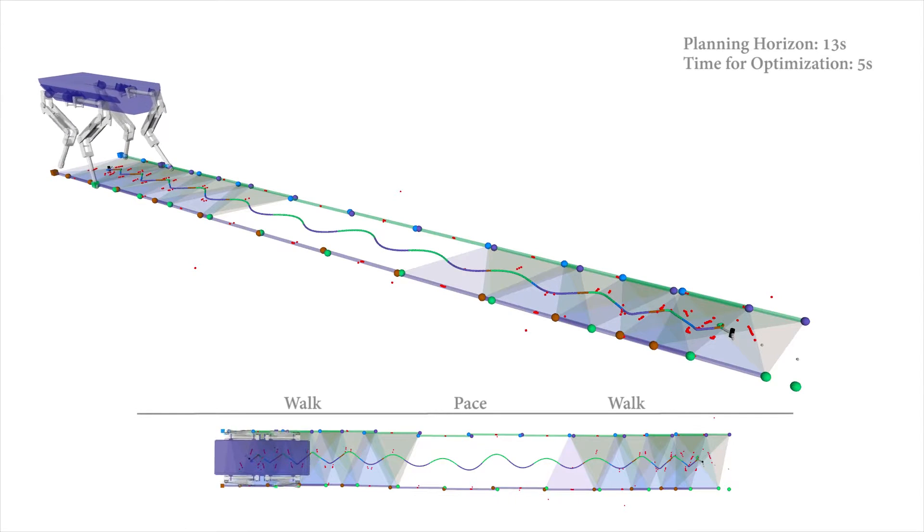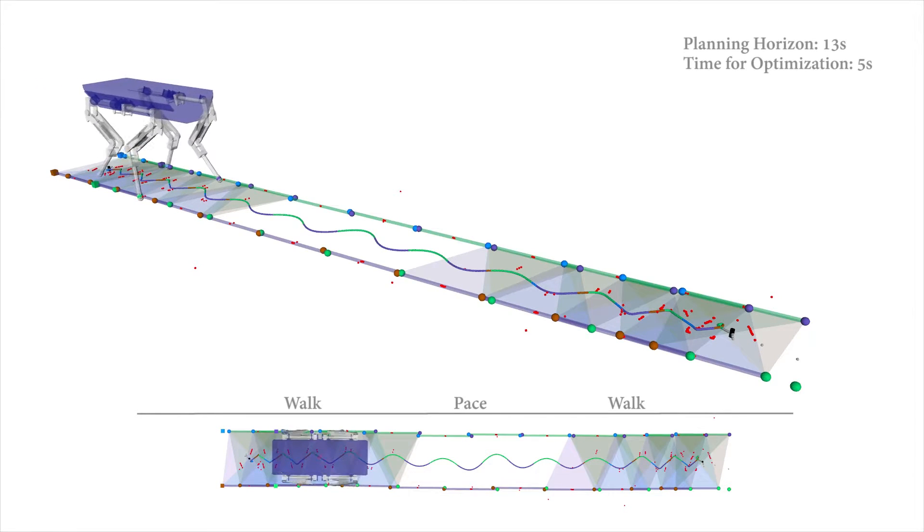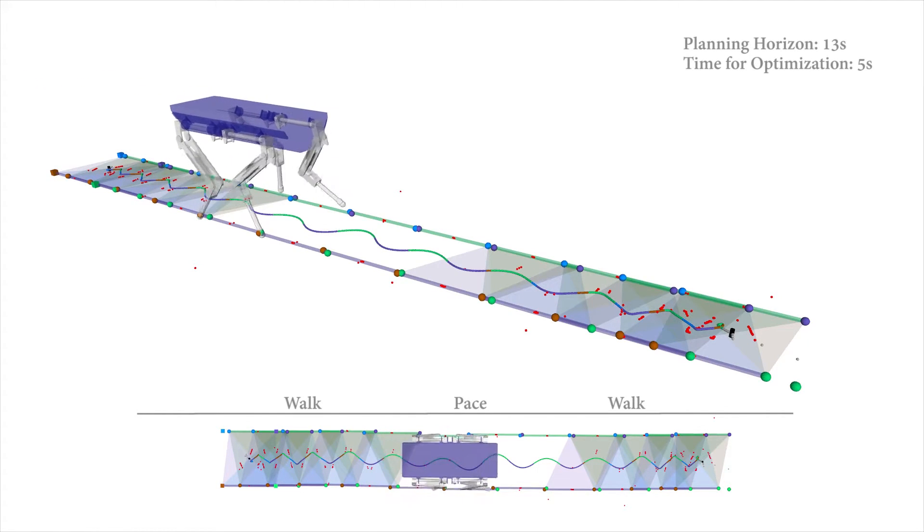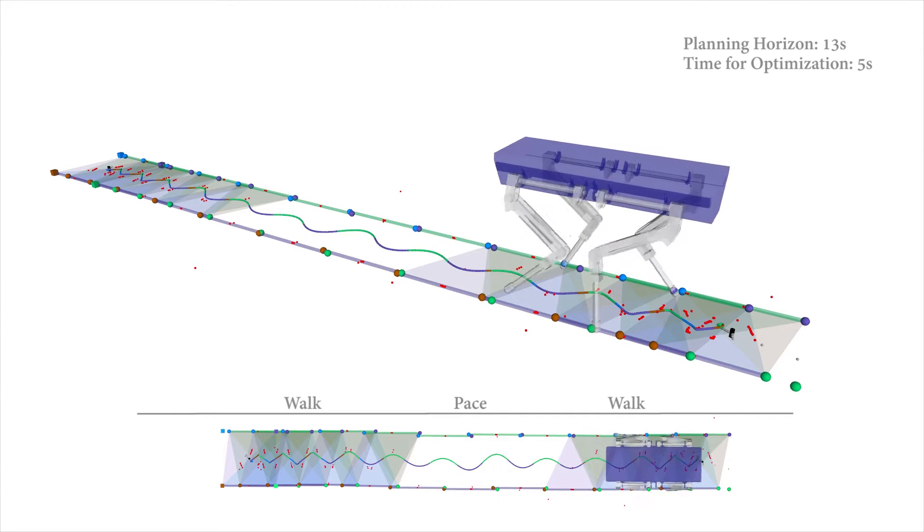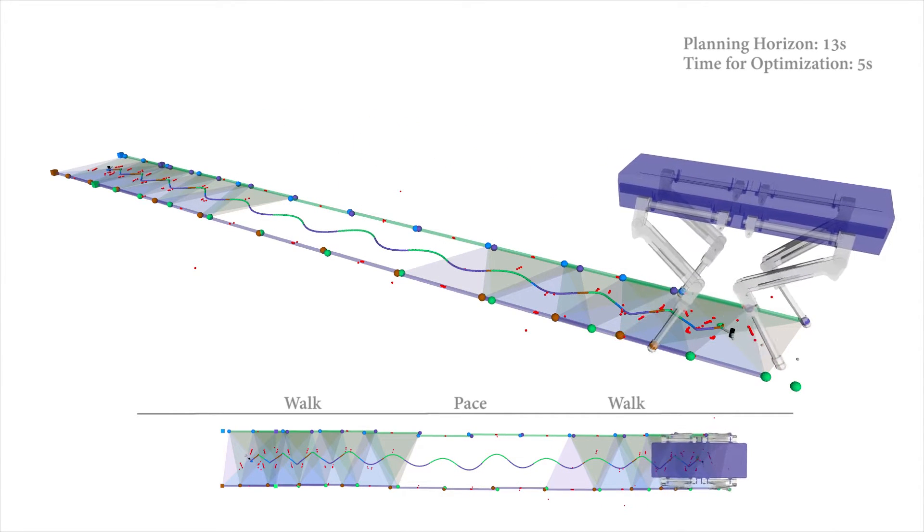For a transition to pacing, the steps of the side legs are gradually overlapped. The support arrows change to line contacts during the full pace in the middle of the motion, and the center of pressure remains inside these lines.